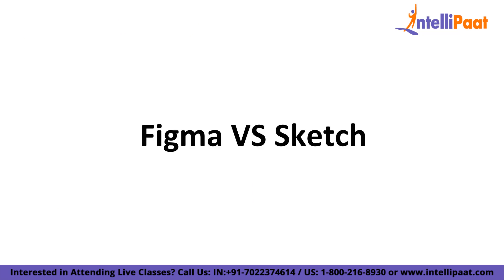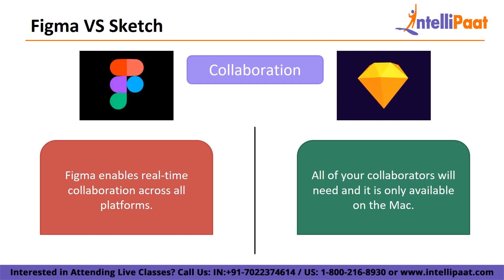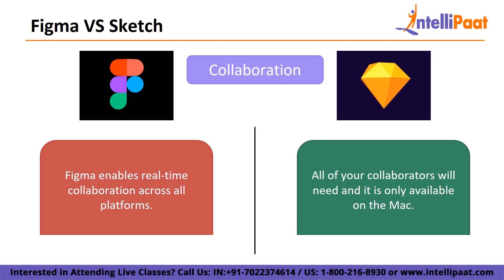Now let's talk about Figma vs Sketch. Having covered the fundamental advantages and disadvantages of both tools, let's compare them in several categories. Starting with collaboration: Figma enables real-time collaboration across all platforms, working similarly to Google Docs in that users can collaborate on the same project and make visible changes and comments in real-time. You can even see the mouse movements of other users with no syncing or lag time issues. When it comes to collaborative design, Sketch only introduced this feature in 2021 via a web app, all collaborators will need paid Sketch subscriptions, and the feature is only available on Mac.